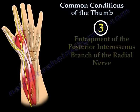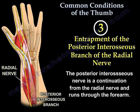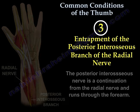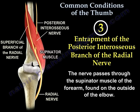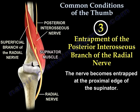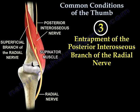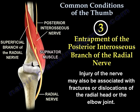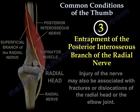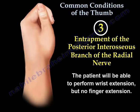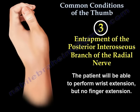Entrapment of the Posterior Interosseous Branch of the Radial Nerve. The posterior interosseous nerve is a continuation of the radial nerve that runs through the forearm. The nerve passes through the two heads of the supinator muscle and becomes entrapped at the proximal edge of the supinator. This injury can also be associated with fracture dislocation of the radial head or the elbow joint. The patient will be able to perform wrist extension but will have no finger extension.